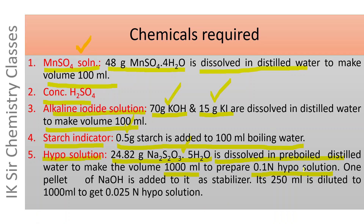For the preparation of 0.025 N hypo solution, 24.82 grams hypo is dissolved in pre-boiled distilled water and the volume is made 1000 ml. The water must be boiled so that its dissolved oxygen is removed. One pellet of NaOH is added as a stabilizer. Then 250 ml of this 0.1 N hypo solution is diluted to 1000 ml, giving us 0.025 N standard hypo solution.